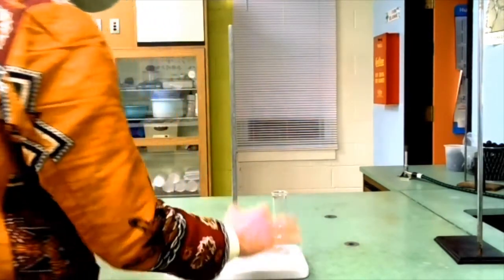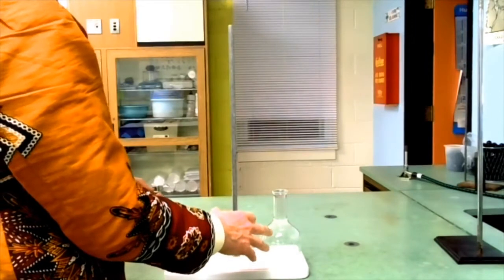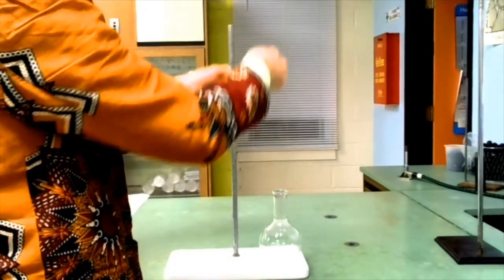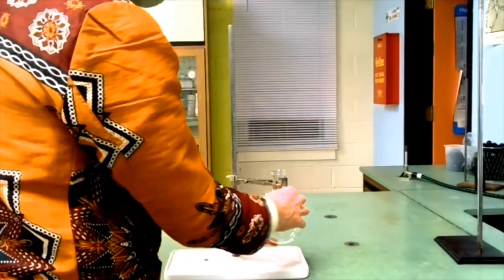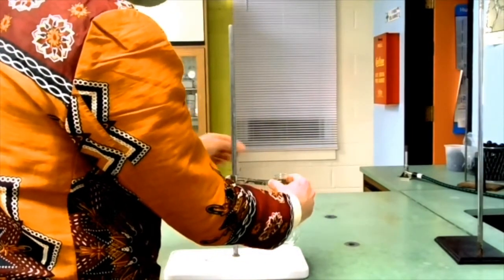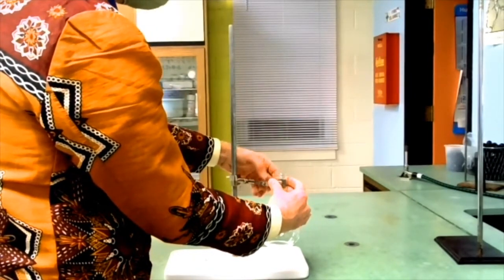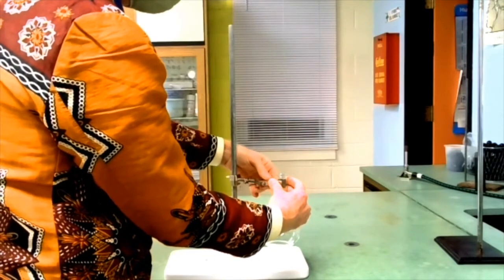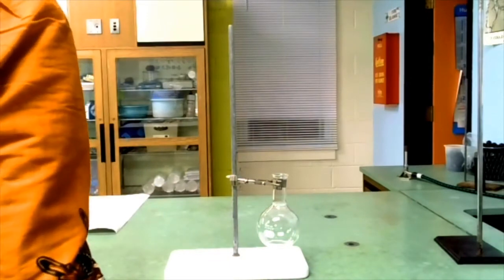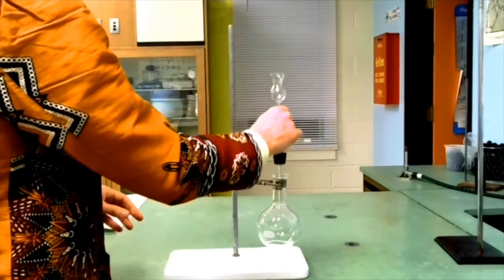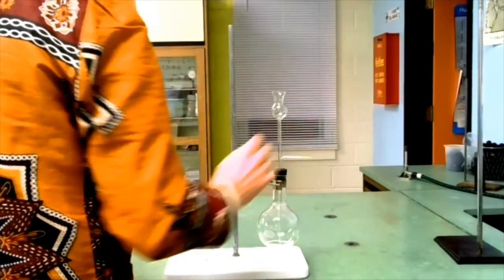First I need a clamp for the 500 milliliter flask. This is the flask that we're going to generate the carbon dioxide in. I want it a little bit off the ground. I'll tighten the clamp so that holds it nice and securely. And the thistle funnel is going to go in there.